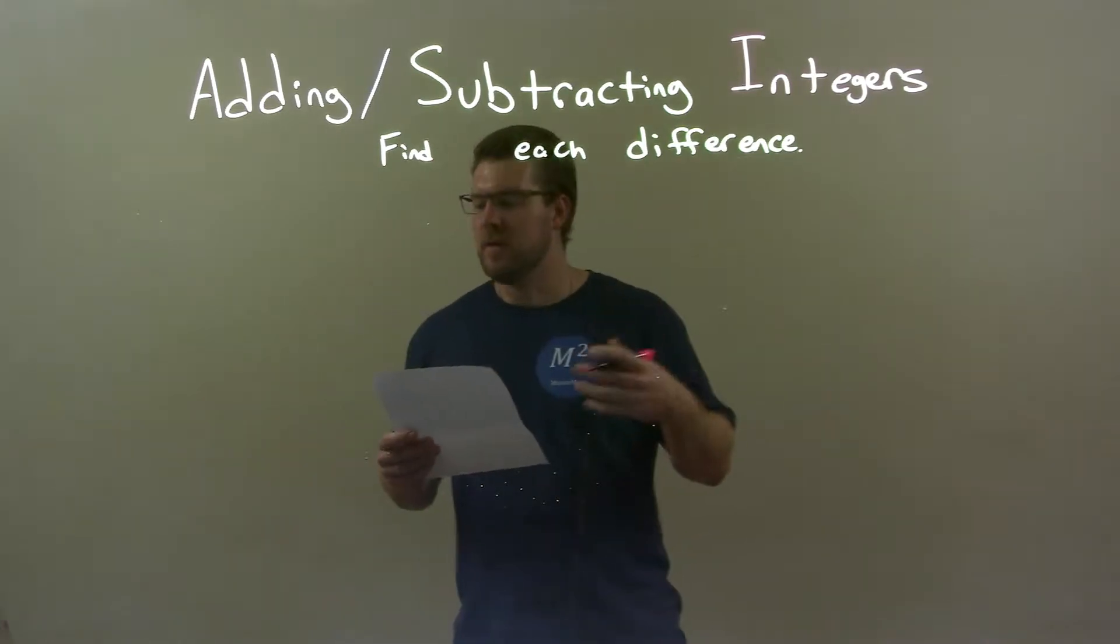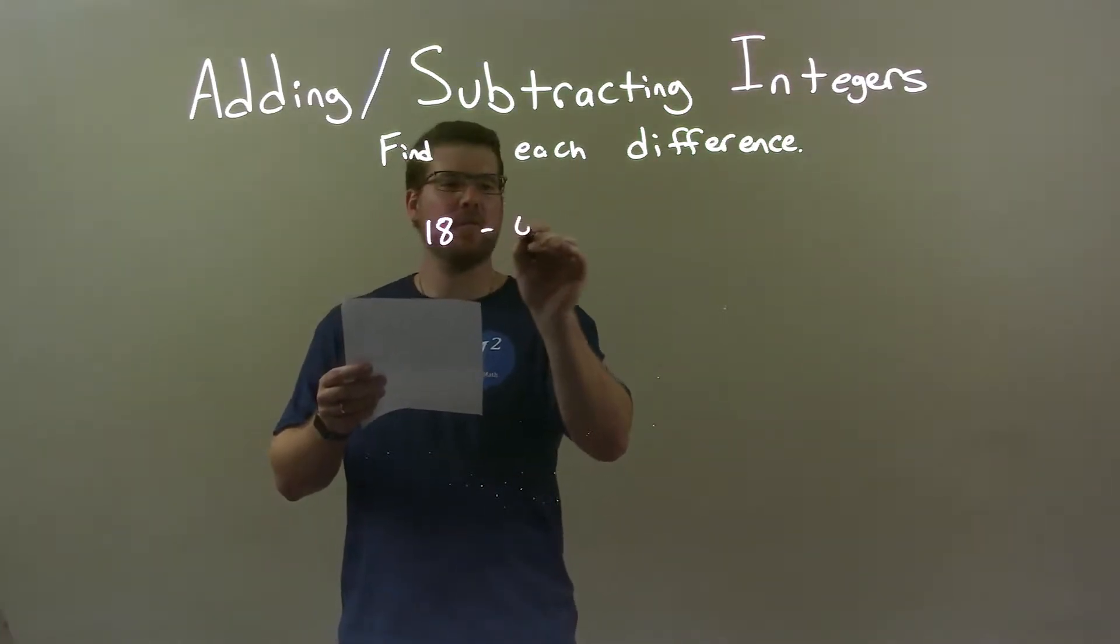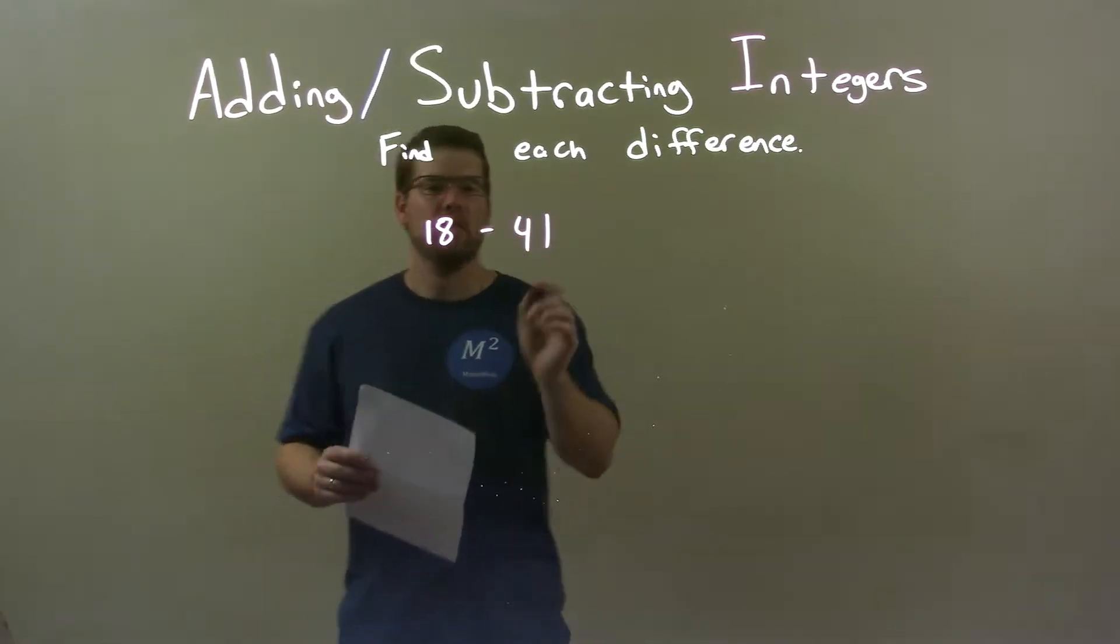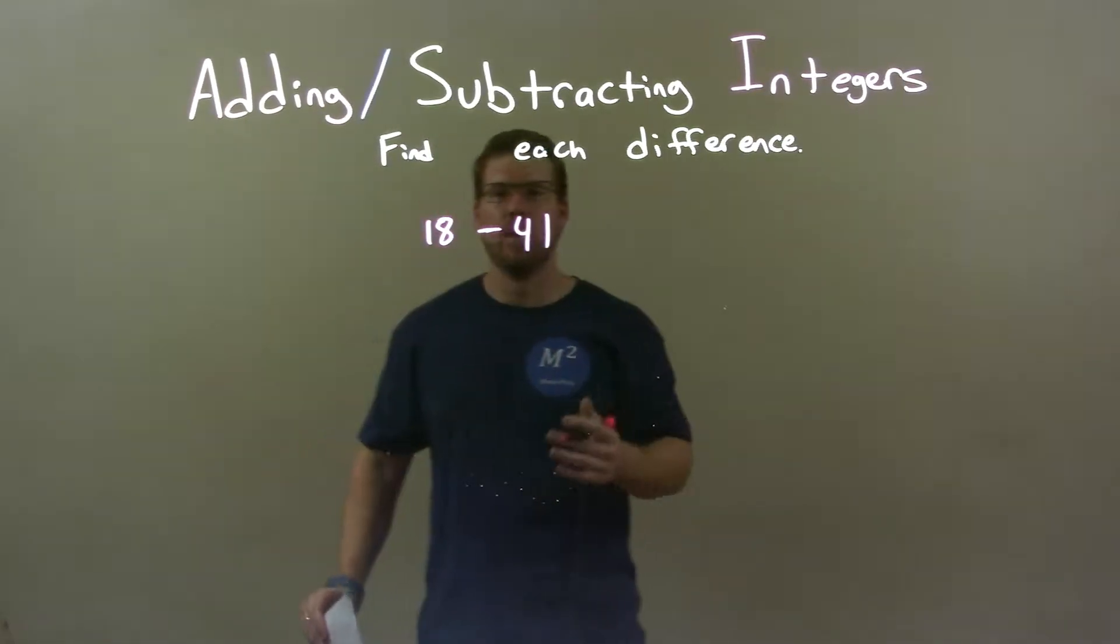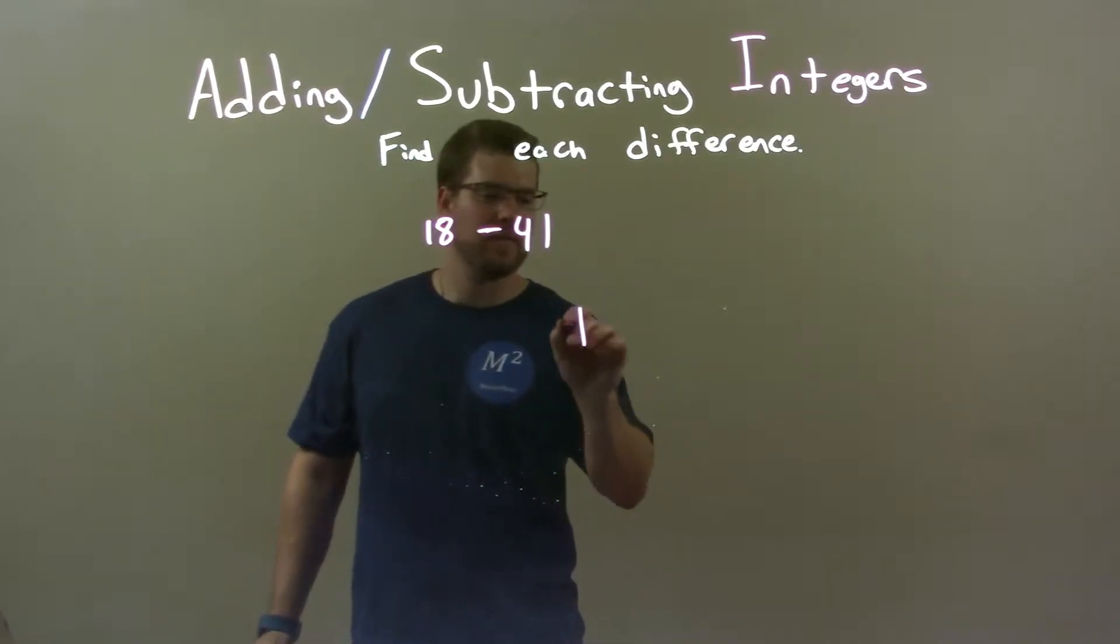So, I've always given these integers: 18 minus 41. So, we have 18 minus 41. Well, the first thing I'm going to do is I'm going to start out with positive 18 on the number line.